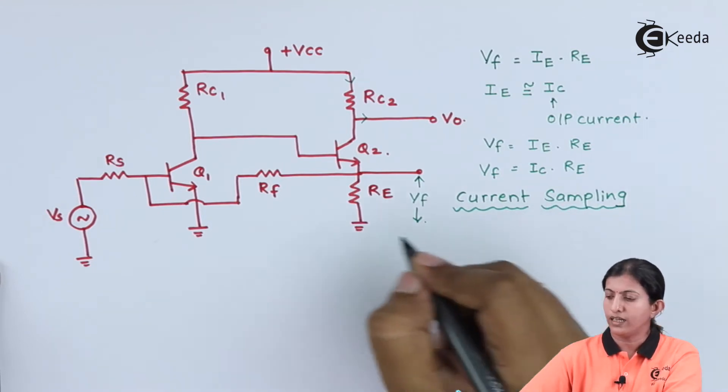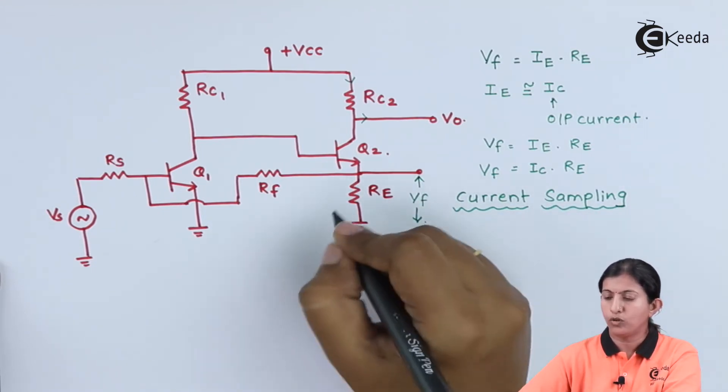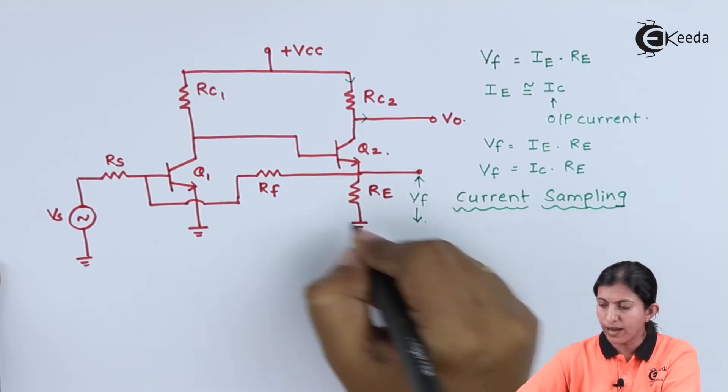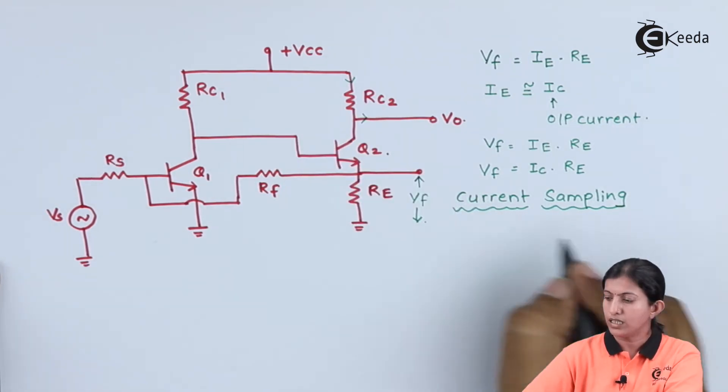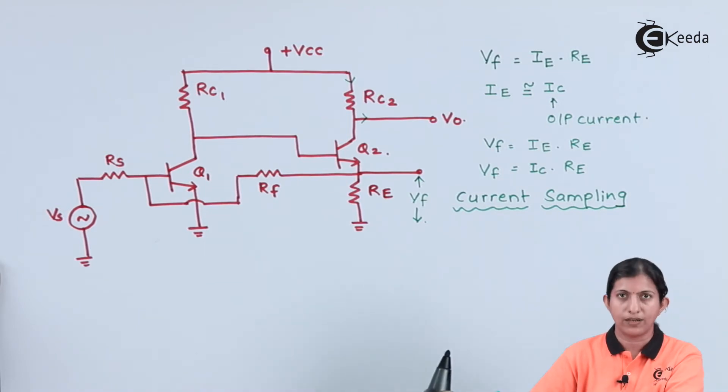As we are taking part of the output current, and this feedback voltage depends upon the output current, this is current sampling. Now we will discuss which type of mixing this is.